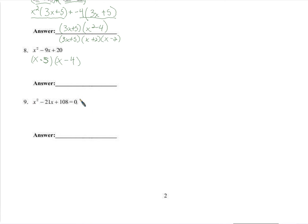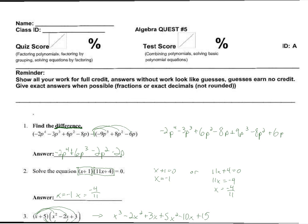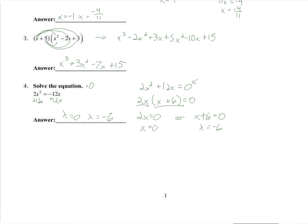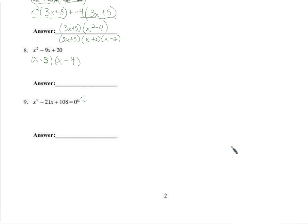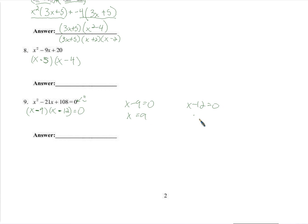Now we're going to solve this equation — it's equal to zero, so we're happy about that. We factor the left side. Very similar to the one we just finished. It's going to be two numbers that multiply to 108 and add to negative 21, so two negative numbers. After a little searching and guess-and-check, we find that 9 and 12 do the job: 9 times 12 is 108, and negative 9x minus 12x gives negative 21x. Remember this is all equal to zero, so either x minus 9 equals 0 or x minus 12 equals 0, giving x equals 9 or x equals 12.